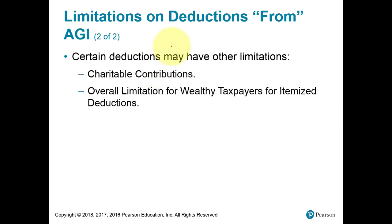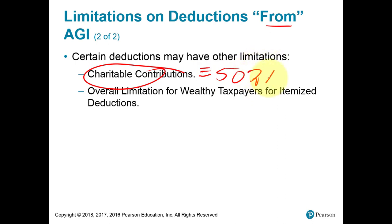There are other for-AGI itemized deductions with limitations. Charity: the limitation is on the amount you can claim in any one year. If you have any excess you couldn't claim, you can carry it over to the next year. The amount you can claim is usually going to be 50% of your AGI. If you have extra, you just carry it over to next year subject to this limitation, and we'll see in a future chapter it's a bit more complex than just this 50% AGI limit.